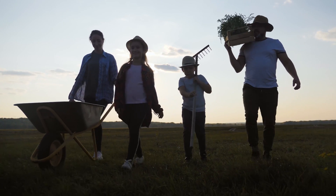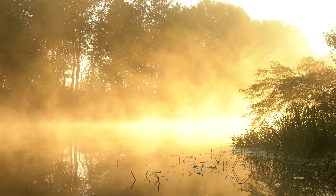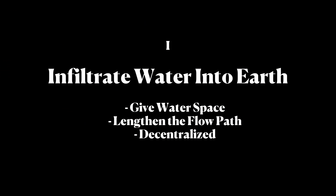There are really simple things that we all can do, no matter where we are, to help reverse these cycles — to reverse the drought, to restore the health of our rivers and landscapes, and to reduce the flood and fire we experience. The first way is to infiltrate water into the earth, to give water space, to lengthen the flow path that water takes, and to decentralize water throughout the landscape.